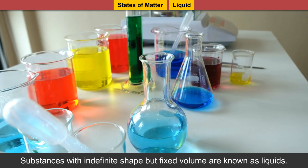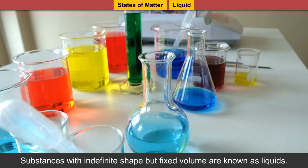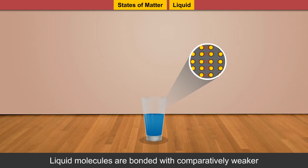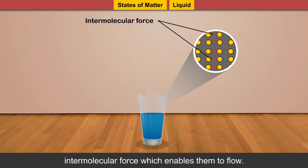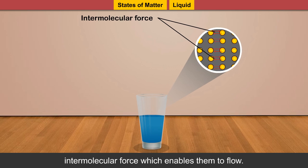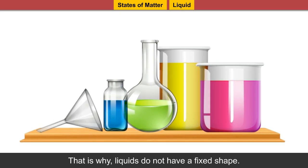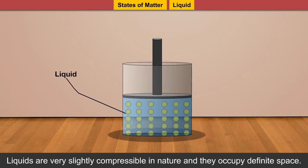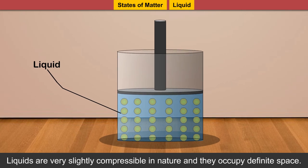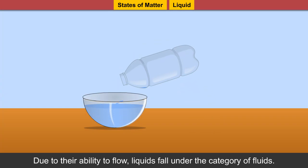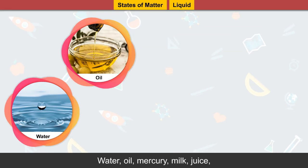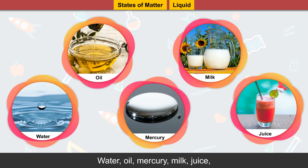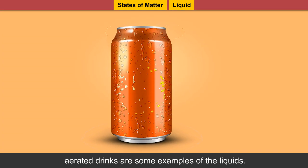Substances with indefinite shape but fixed volume are known as liquids. Liquid molecules are bonded with comparatively weaker intermolecular force which enables them to flow. That is why liquids do not have a fixed shape. Liquids are very slightly compressible in nature and they occupy definite space. Due to their ability to flow, liquids fall under the category of fluids. Water, oil, mercury, milk, juice, aerated drinks are some examples of liquids.